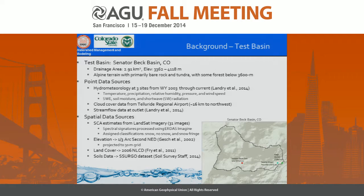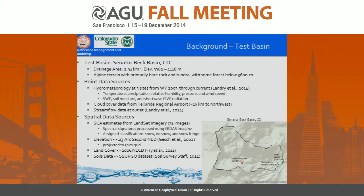That led us to look at a test basin in Colorado — the Senator Beck Basin. It's a smaller basin but has a lot of point data as well as spatial data sources. For hydrometeorology, there are three sites, two within the basin, both with estimates of snow water equivalent and shortwave radiation. There's cloud cover data from 16 kilometers away at the Telluride Regional Airport, and good flow data at the outlet. For spatial data, we had snow cover area estimates from Landsat imagery — about 31 images over a five-year period — classifying each cell as snow, no snow, or snow fringe.